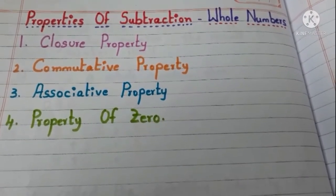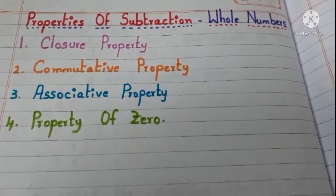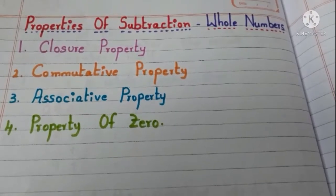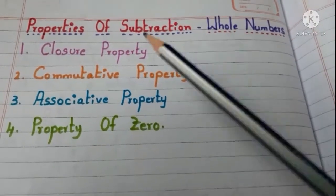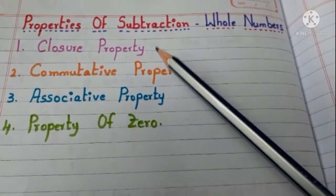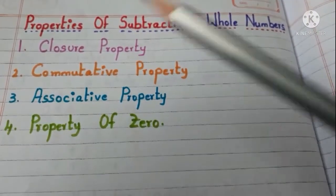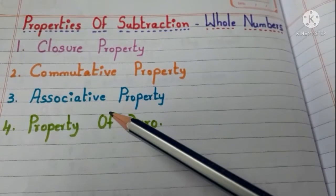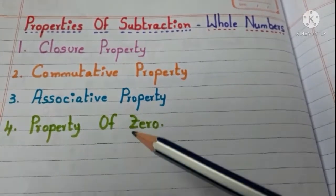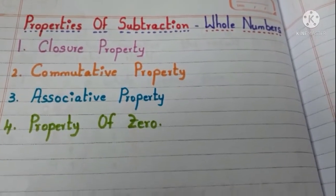We have 4 properties of subtraction. Those are closure property, commutative property, associative property, and property of 0.